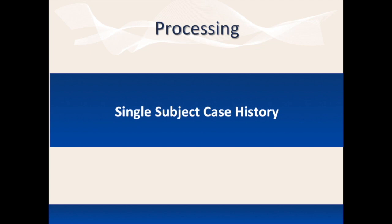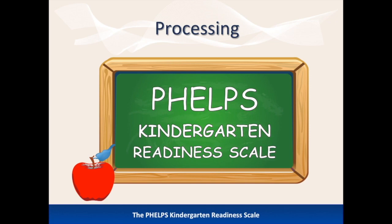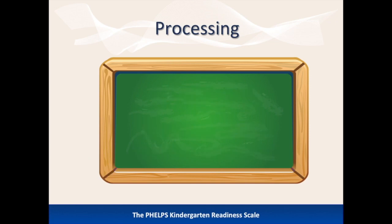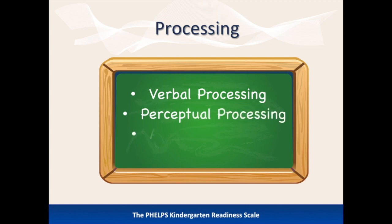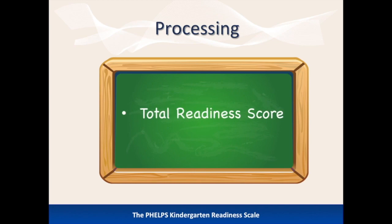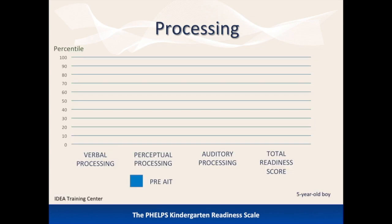This case history presents an example of changes in a pre-kindergarten child's processing skills after Berard AIT. The Phelps Kindergarten Readiness Scale is designed to evaluate fundamental strengths and weaknesses in basic abilities such as verbal processing, perceptual processing, and auditory processing, which gives a total readiness score for skills needed for later academic success. It does not measure how much a child has already learned. This example shows the baseline results for a young boy tested in the spring prior to entrance into kindergarten.